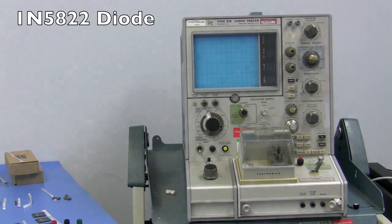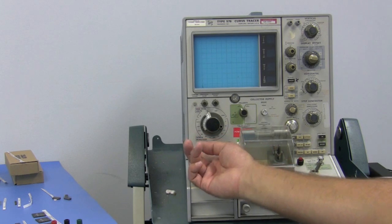Okay, so 1N5822 diodes. Power the machine on.